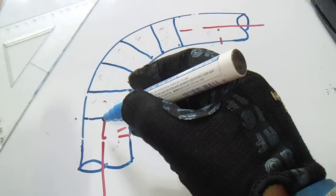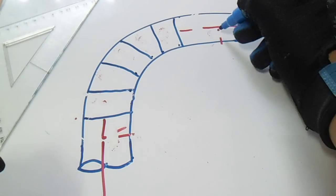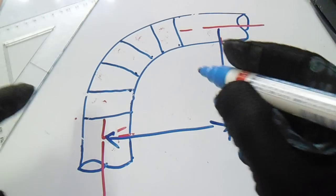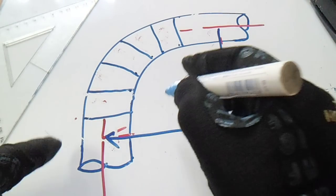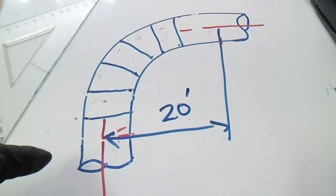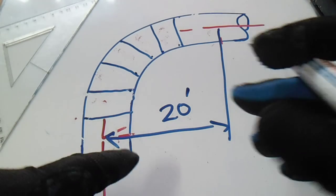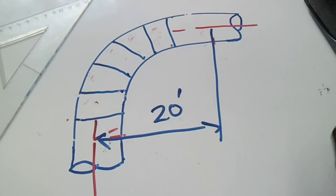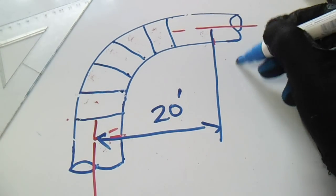We have a centerline here and also a centerline here. Let's put the dimensions first. We have a radius of, let's say for example, 20 feet. So this is our radius for the 90 degree turn.